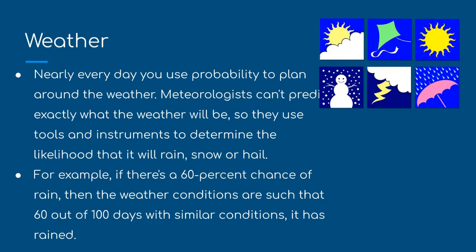In weather, probability is used nearly every day. Meteorologists can't exactly predict what the weather will be, so they use tools and instruments to determine the likelihood that it will rain, snow, or hail. For example, if there is a 60% chance of rain, weather conditions are such that 60 out of 100 days with similar conditions it has rained — helping you decide what to wear or whether to take an umbrella. Meteorologists also examine historical databases to estimate high and low temperatures and probable weather patterns.